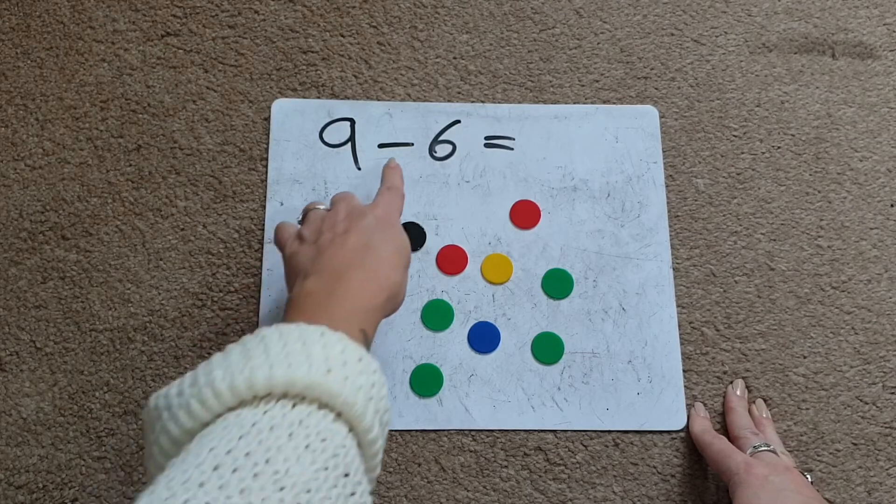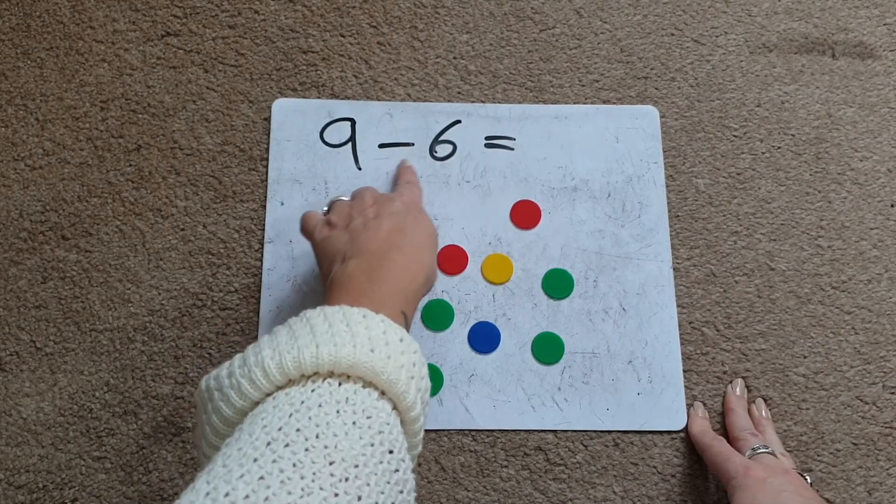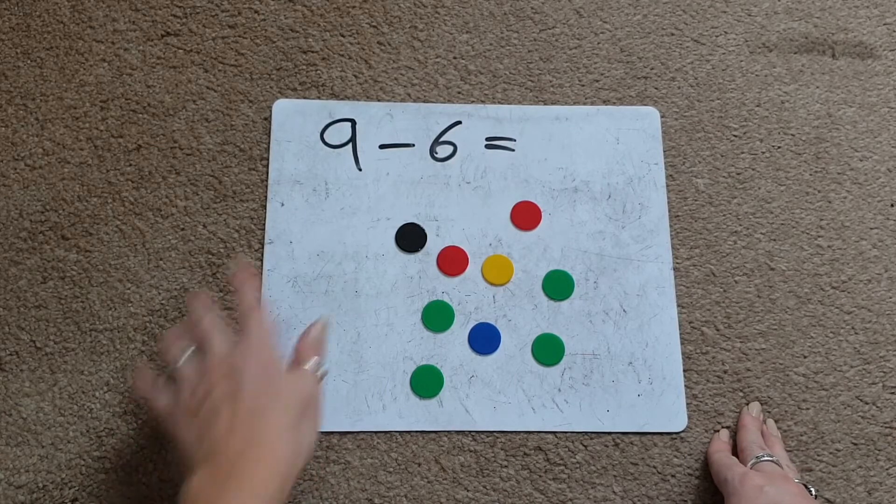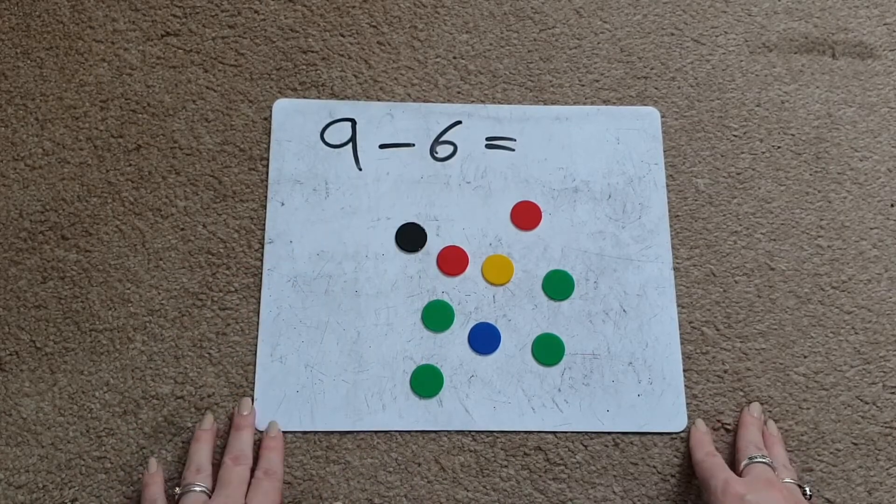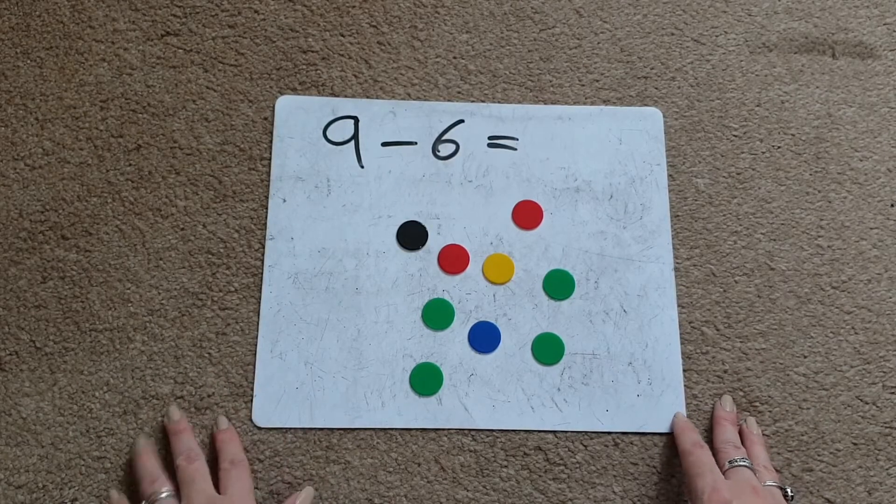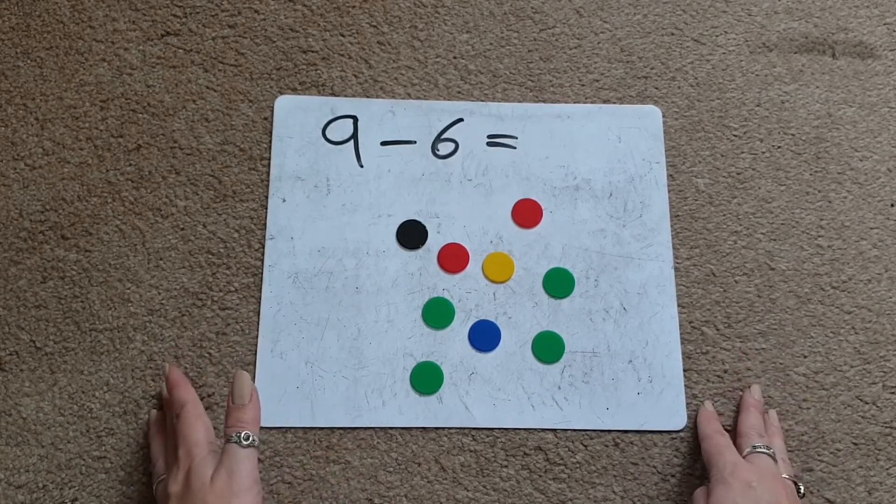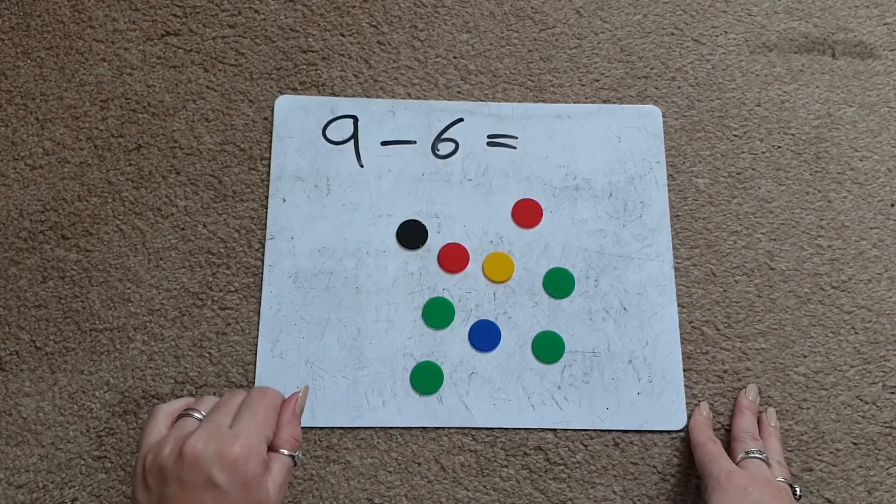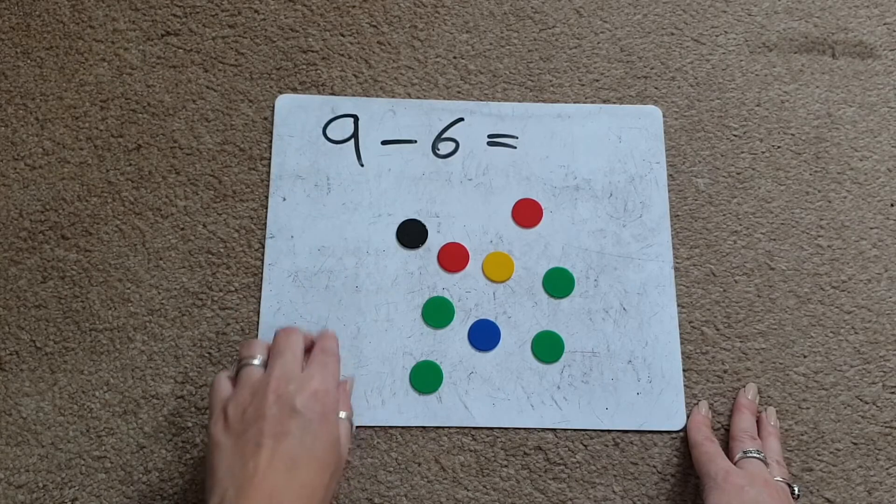Then we're going to do the take away part, so take away 6. I usually try and emphasize the words take away, because that's usually what we start with, rather than the word subtract, because they seem to understand that better. And I actually basically say you're physically going to take away 6 objects. So then I'll ask them to take away 6 counters.